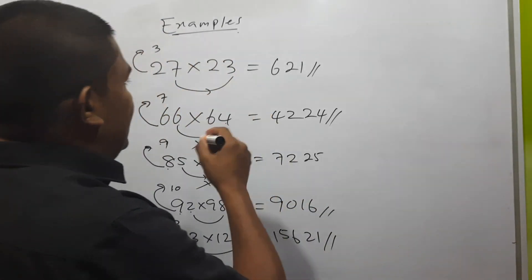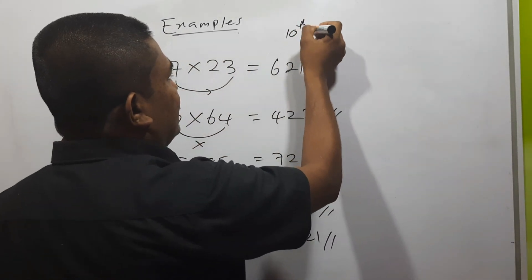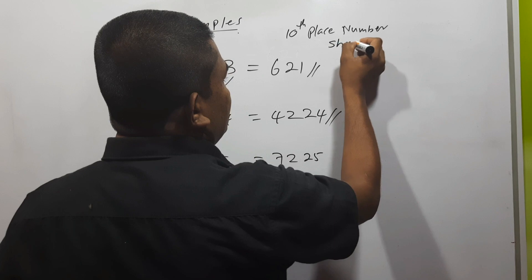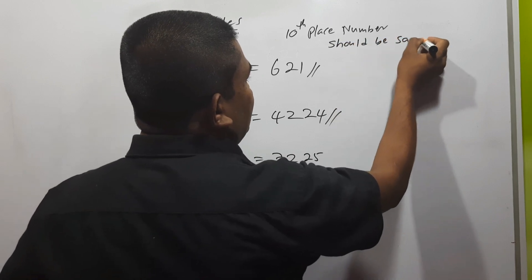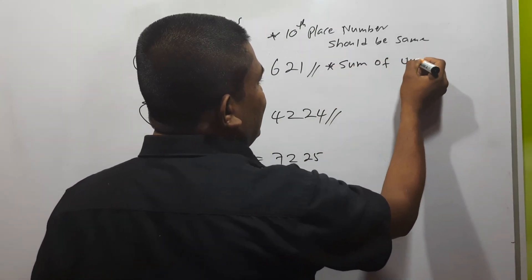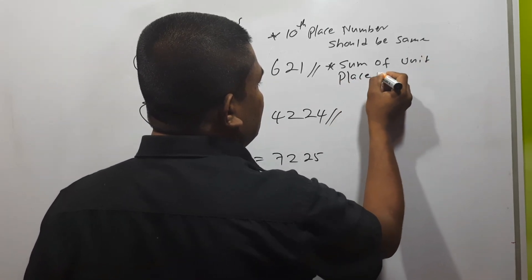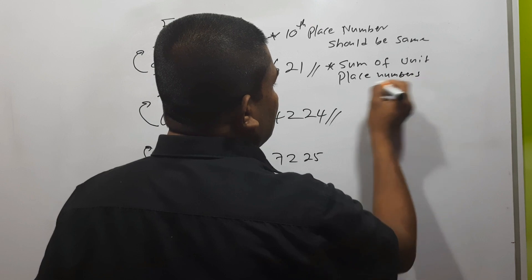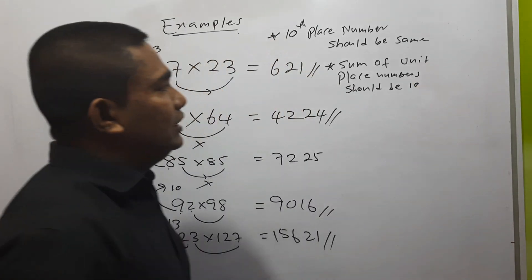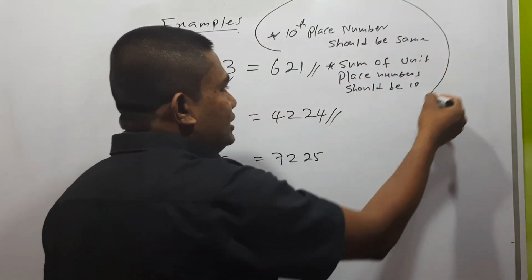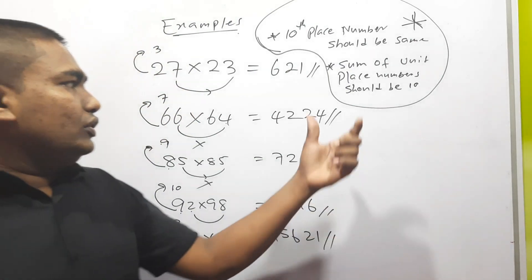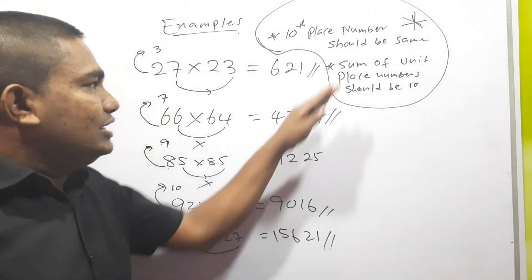The 10th place number should be the same in both numbers. If these two requirements are satisfied, we can use this method. Otherwise, we can't use this method.